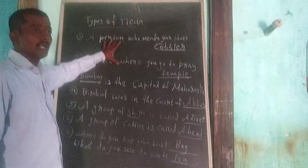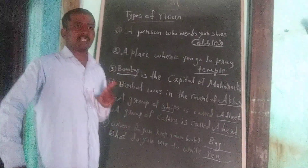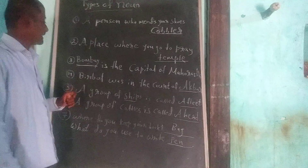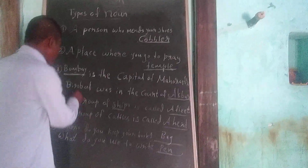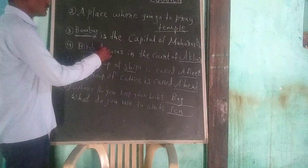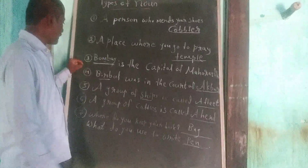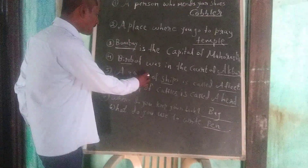The second type is the proper noun. When I say 'Bombay,' you can identify there is one Bombay in India. Bombay is the capital of Maharashtra — you know exactly what place I am talking about. Similarly, Birbal and Akbar: Akbar is a great king, Birbal was a very clever minister of Akbar. You come to know perfectly who I am talking about. So a noun which gives a specific name of a particular person or place is called a proper noun.